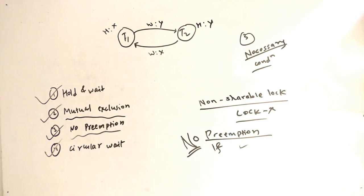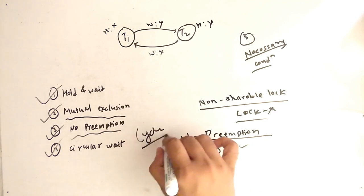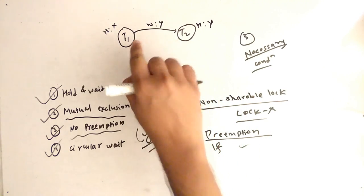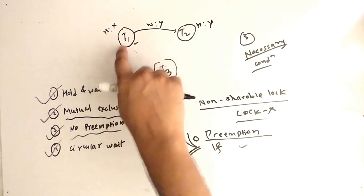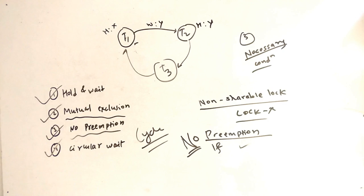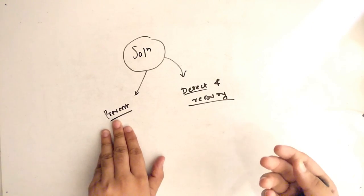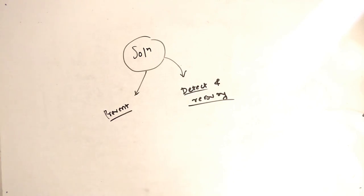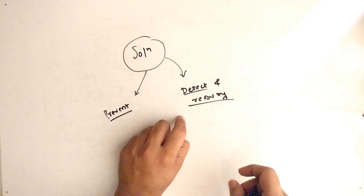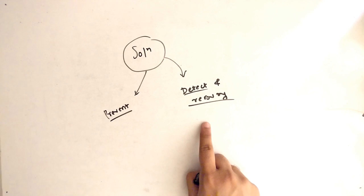The fourth condition is circular wait. Circular wait means T1 is waiting for T2, and T2 is waiting for T1 — forming a cycle. For example, with a third transaction T3: T1 waits for T2, T2 waits for T3, and T3 waits for T1. If you see any such cycle, we are in circular wait, which is a deadlock condition. The solution for deadlock is either we can prevent the deadlock, or if deadlock has already happened, we detect it and recover from it.